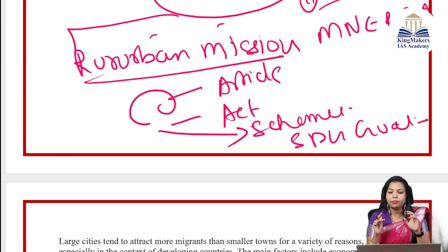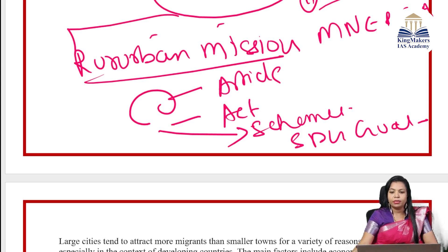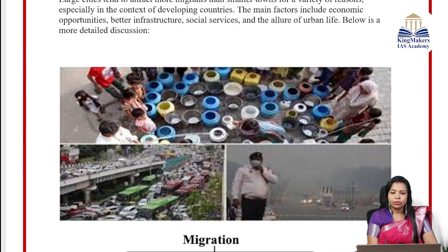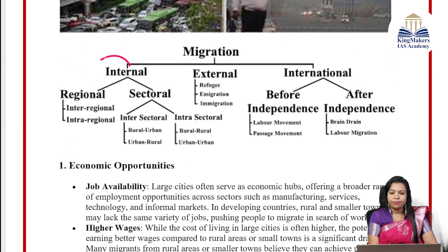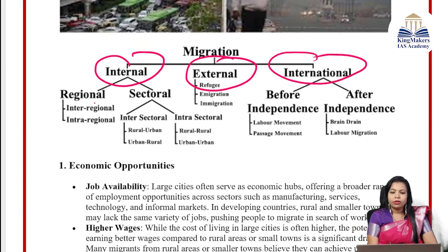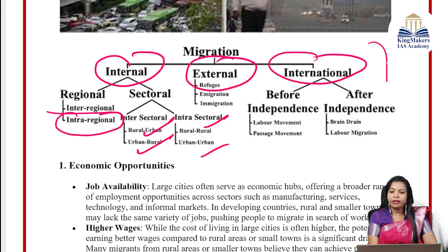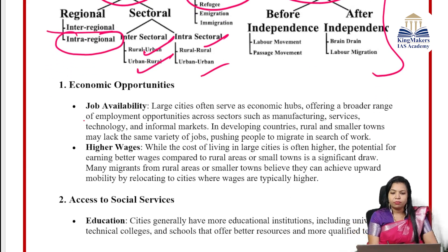Now let's see the answer framework. In the macro situation, larger cities attract more migrants for a variety of reasons. Migration is internal — intra-regional or inter-regional — or even international. You can present a diagram showing rural to urban and urban to rural flows. Economic causes include economic opportunity, job availability, and higher wages. When you can't segregate these points clearly, give examples. Access to social services like education and healthcare is best in cities. Urban infrastructure and amenities — transportation, utilities, and technology — also matter.